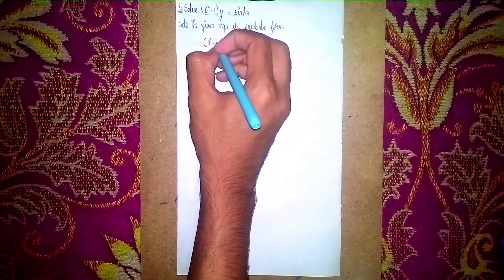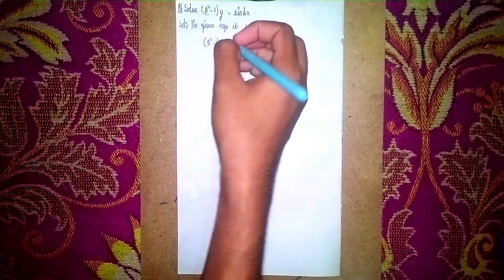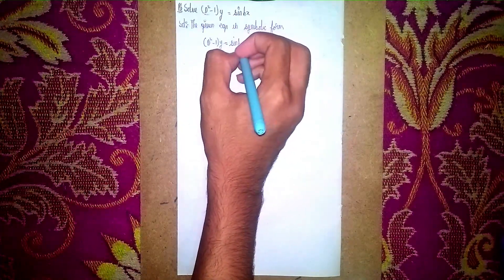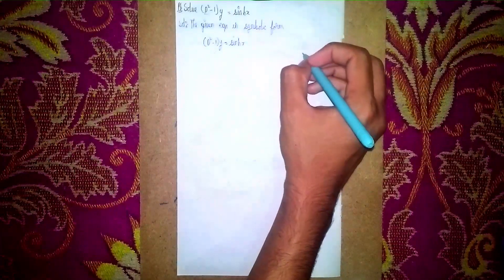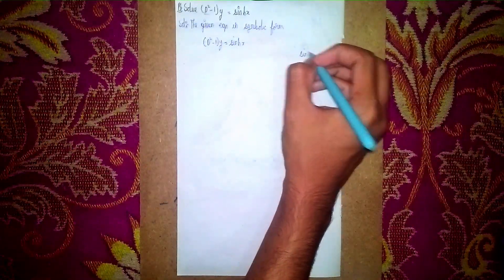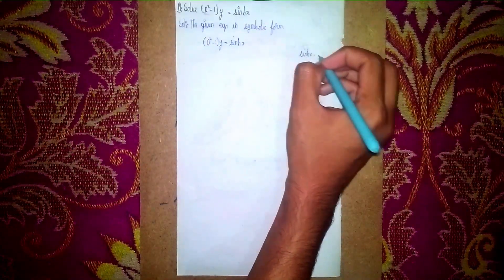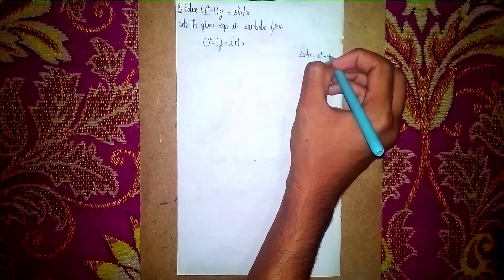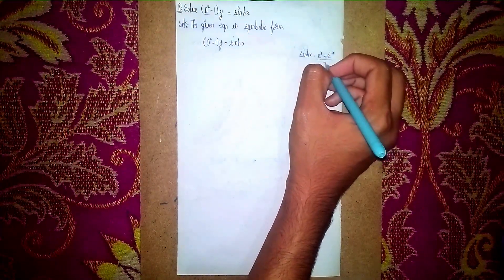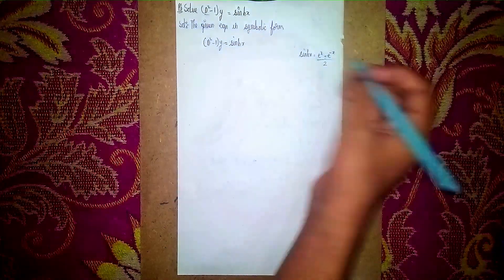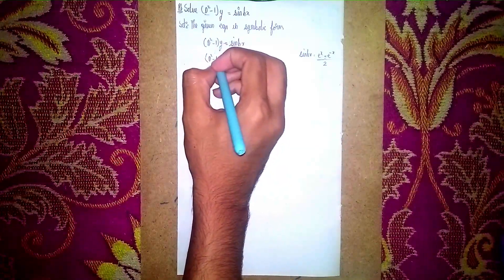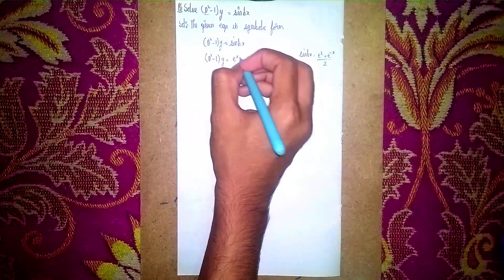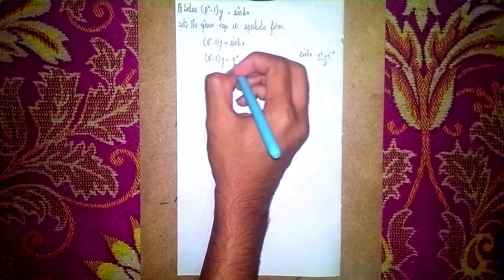We write the equation as (D² - 1) y = sinh x. Now sinh x is equal to (e^x - e^(-x)) / 2. So our equation becomes (D² - 1) y = (e^x - e^(-x)) / 2.